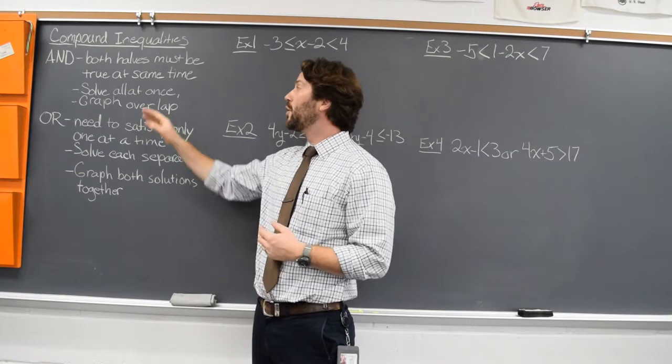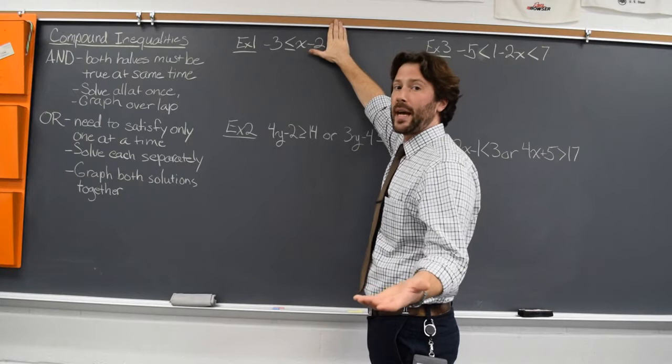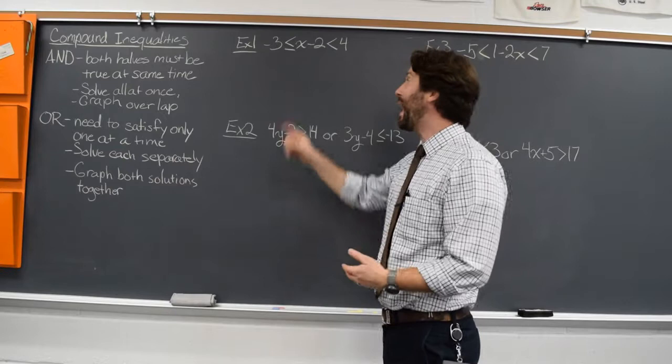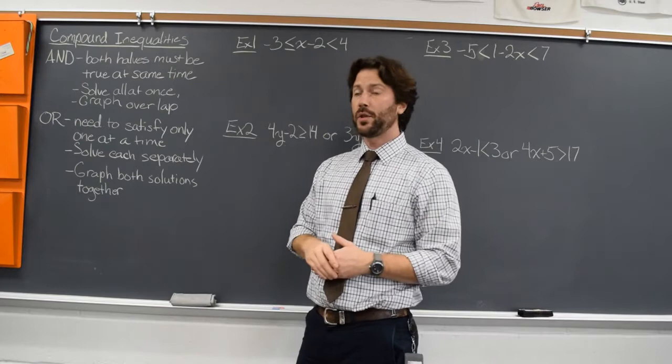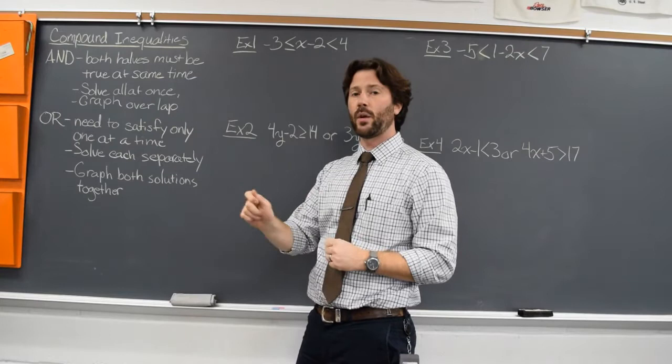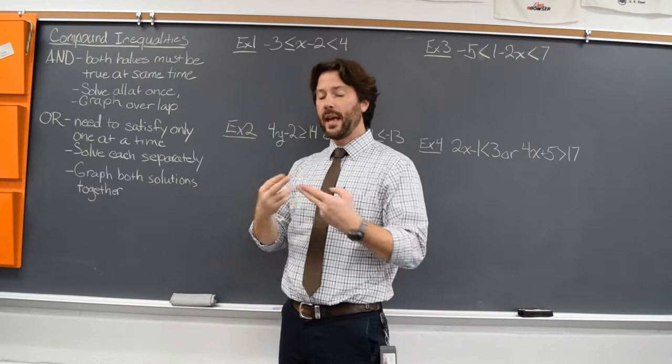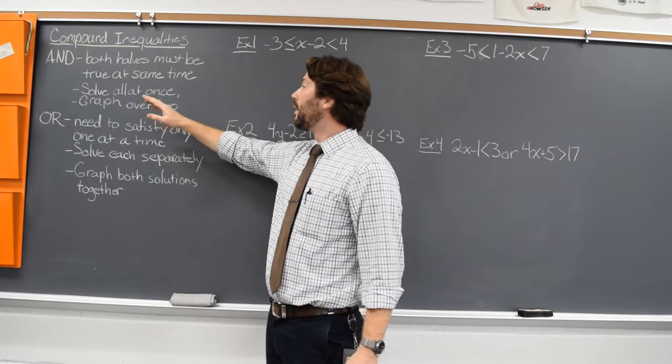So we solve the whole thing all at once. When we had an inequality like this one, we would add two to both sides. Well now, when we look at this, we have three sides, so we're going to add that two to all three sides — we're going to do the same kind of thing, but we have three sides of the inequality to work with. Now when we go to graph, there are two parts to the solution. We're going to graph each half of the inequality very lightly, and then darken where they overlap, because both halves of that inequality must be true. So our solution is the part of the graph where both of those graphs overlap.